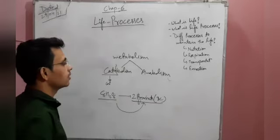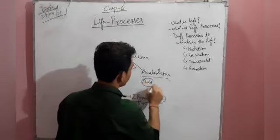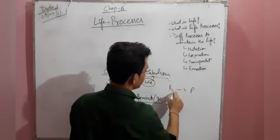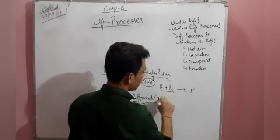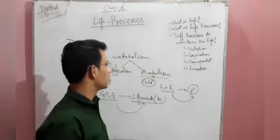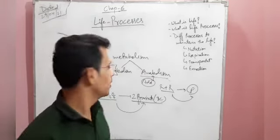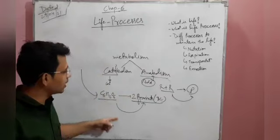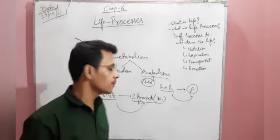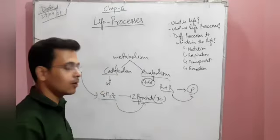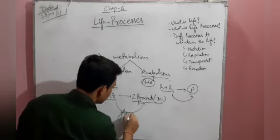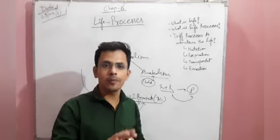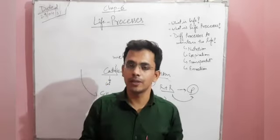Anabolism is when reactants combine to form a single product — an addition or combination reaction. For example, the formation of glucose is called anabolism, while the breakdown of glucose into pyruvate is called catabolism. The specific term for glucose breaking down into pyruvate is glycolysis, and glucose formation is called gluconeogenesis — this is extra information beyond the textbook.